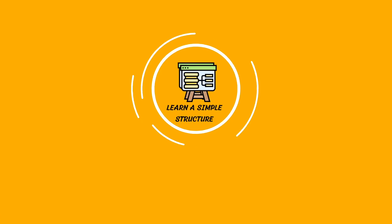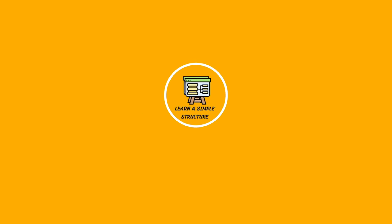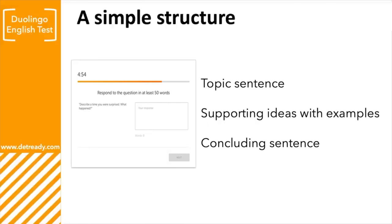A lot of my students ask me how to write or speak for longer, and tip number three is to learn a simple structure for the speaking and writing questions. For the 'Write about a Topic' question type, a good structure would look like this: first a topic sentence which outlines your main idea or thesis; then supporting ideas with examples — I suggest around two of these; and then you finish off with a concluding sentence.